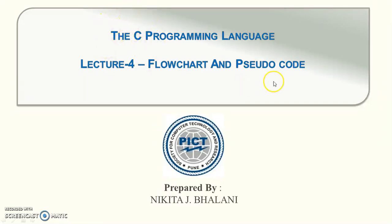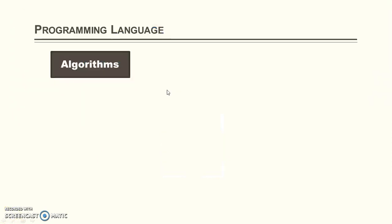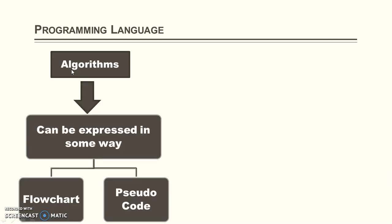Hello everyone, welcome to the tutorial on the C programming language. This is our full lecture in which we will discuss about the flowchart and the pseudocode. As we discussed in the previous lecture, an algorithm is a sequence of steps that to be followed to solve a particular problem. An algorithm can be expressed in two ways: one is the flowchart and one is the pseudocode. A flowchart is nothing but the diagrammatic representation of the sequence of steps, while the pseudocode is an English-like language to represent the sequence of steps.